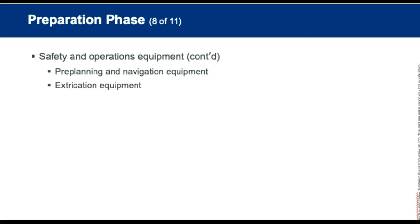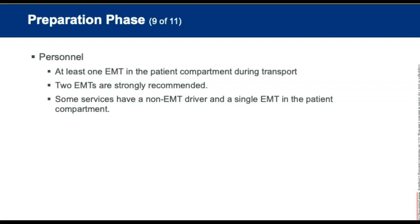Extrication equipment is located in an outside compartment, separate from the patient compartment, and contains equipment needed for simple light extrication even if a dedicated extrication or rescue unit is readily available. At least one EMT must be in the patient compartment during transport.